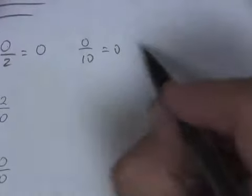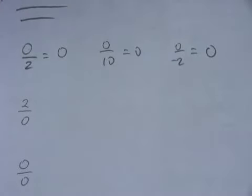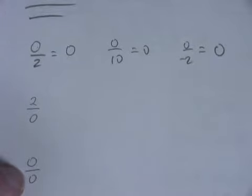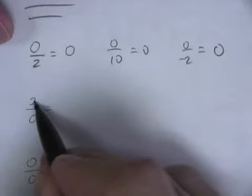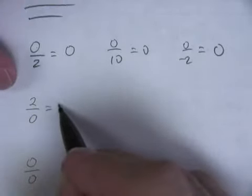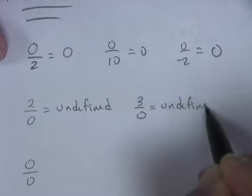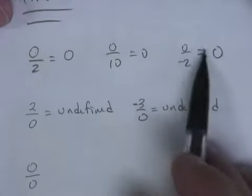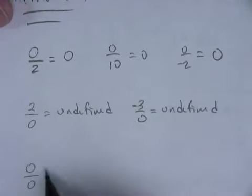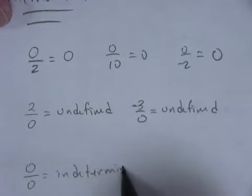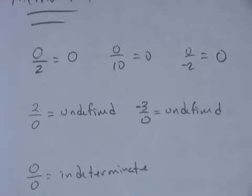Zero over anything is going to be 0. So if you had 0 over 10, that would be 0. If you had 0 over negative 2, that would be 0. So 0 over any number — with the exception of 0 over 0 — is 0. If you flip it around and do 2 over 0, that becomes undefined. We can't divide by 0 in math. So 3 over 0 would be undefined, and negative 3 over 0 would be undefined. Basically: if you see 0 on top, the answer is 0; if you see 0 on the bottom, it's undefined; and if you see 0 on both top and bottom, we call it indeterminate. When you have 0 divided by 0, it's indeterminate. 2 divided by 0 is undefined, and 0 divided by 2 is 0.